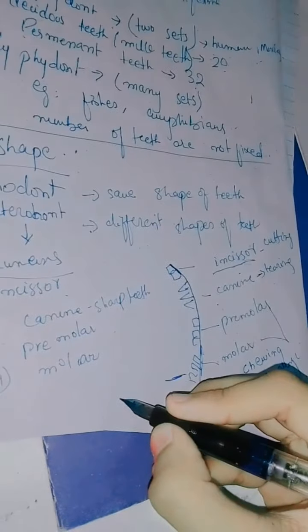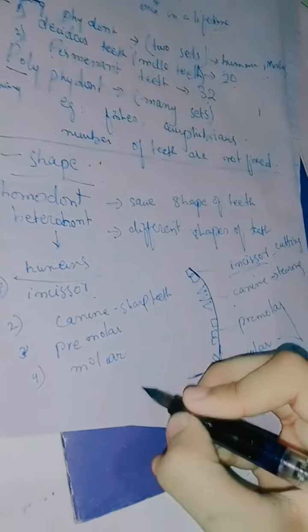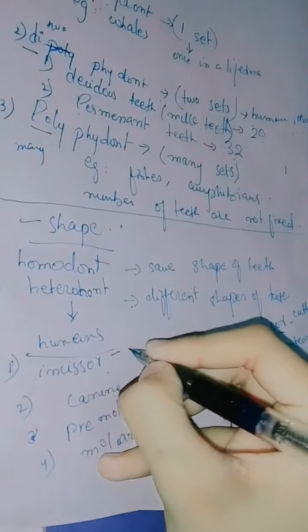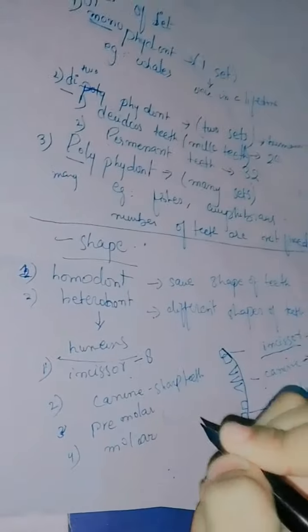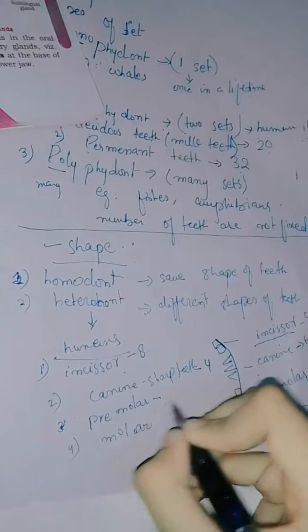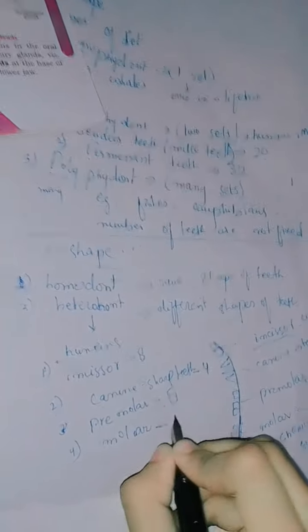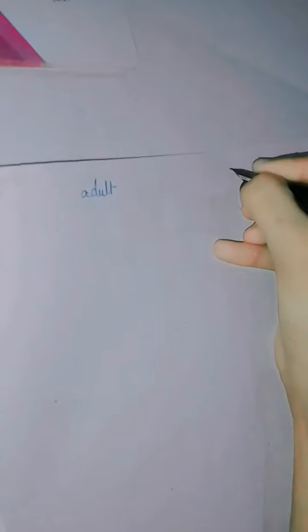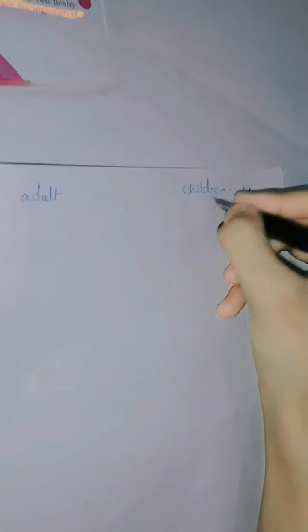Wisdom teeth come under molars — this is an important MCQ point. In adults, incisors are 8 in number, canines are 4 in number, premolars are 8 in number, and molars are 12 in number, giving a total of 32 permanent teeth. Children have milk teeth, which are 20 in total.